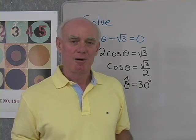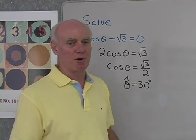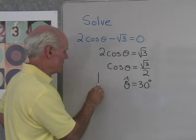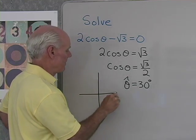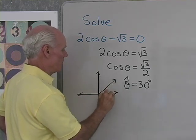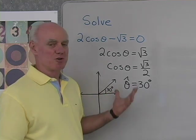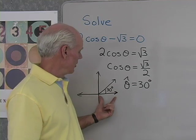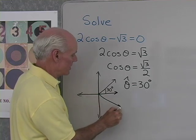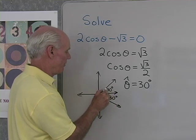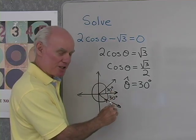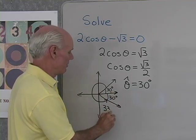Where is cosine positive? Cosine theta is equal to positive square root 3 over 2, so cosine is positive in quadrant 1. And since cosine goes with the variable x, I know that cosine is also positive in quadrant 4. So I'm going to draw in a reference angle of 30 degrees in quadrant 4 and name this angle as 360 degrees minus 30 degrees, which will be 330 degrees.